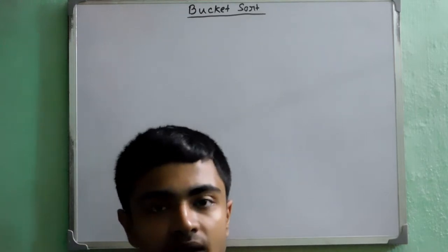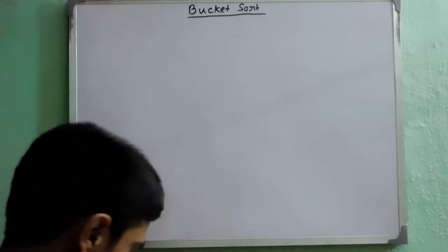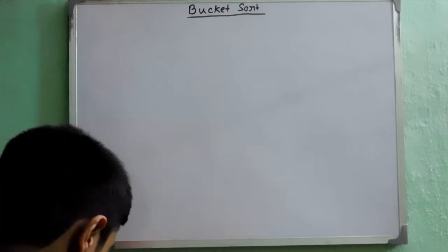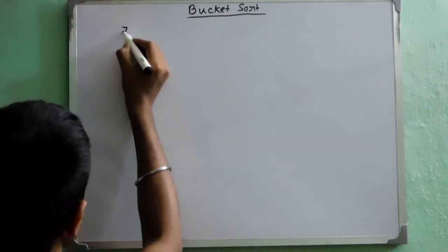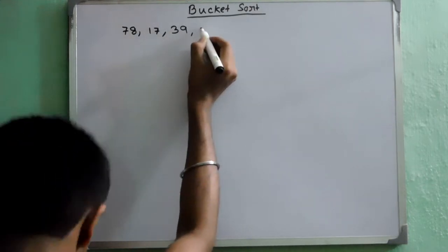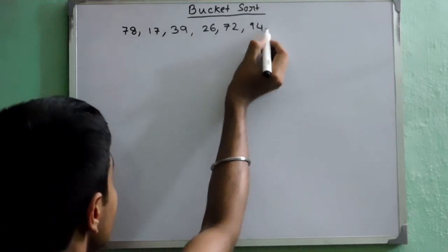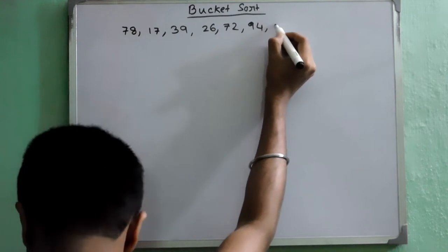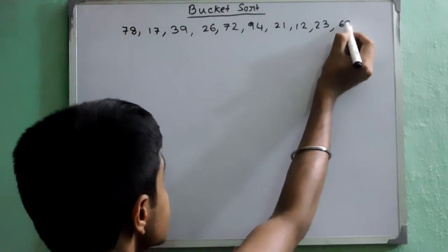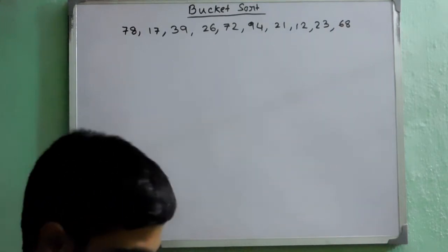Now why I am telling this you will get to know as I show you the example. Now I have been given an array: 78, 17, 39, 26, 72, 94, 21, 12, 23 and 68. So this is the array I have been given. I have to sort this array.